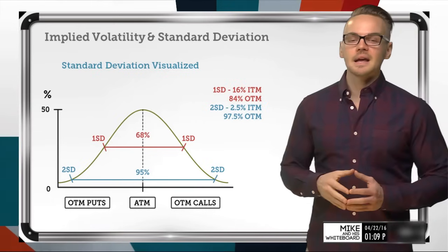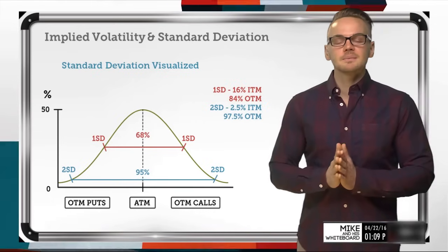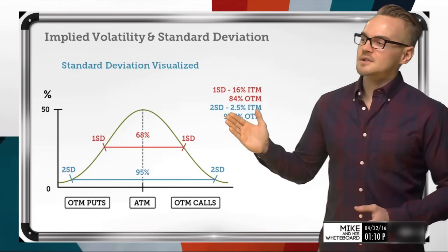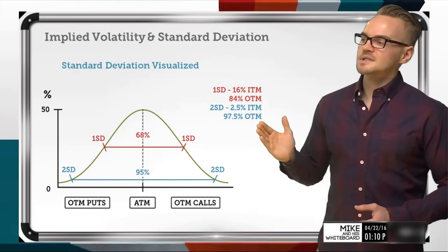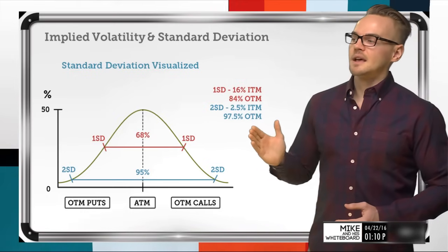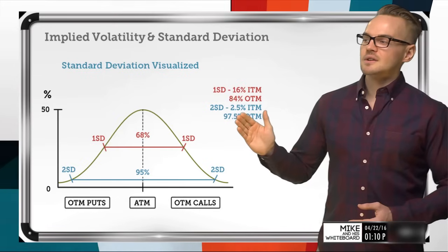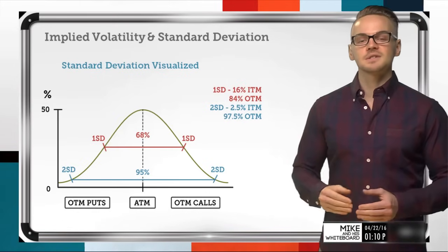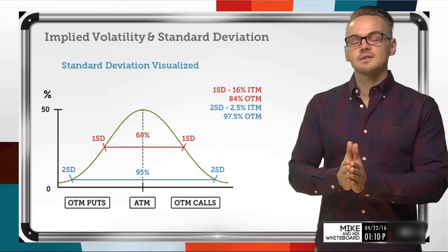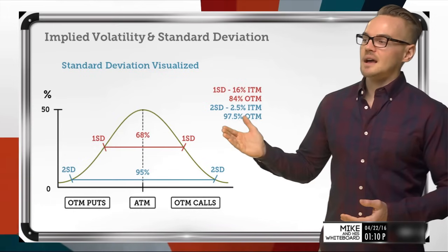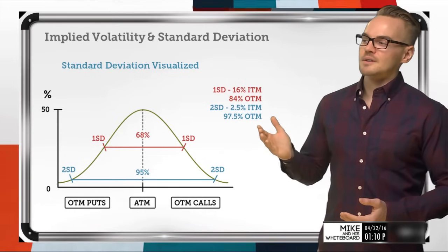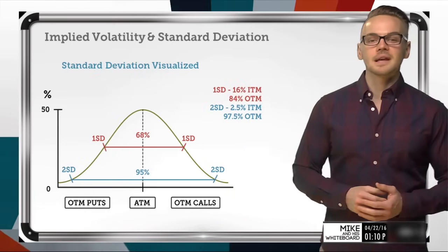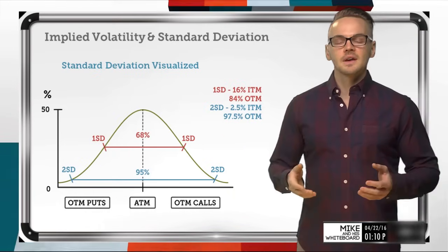Just like with one standard deviation, we can do the same thing with two standard deviations. With two standard deviations, if I have a 2.5% chance of being in the money — which gives me that two standard deviation level — I just take the inverse from 100, which gives me 97.5% of being out of the money.